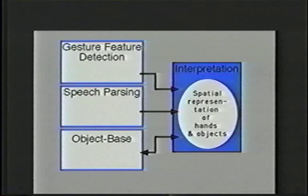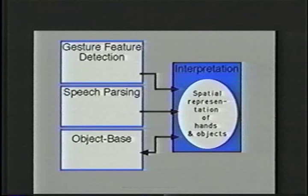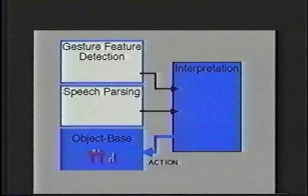An interpretation module receives information from the other three modules. Gestures are not interpreted automatically based on a match to some standard template, but rather are assigned a meaning in the wider context of information from speech and the object base. A spatial representation is used to encode both the depictive gestures and the objects in the object base. This spatial representation allows us to map the relations and actions depicted in gestures to the objects in the displayed scene.